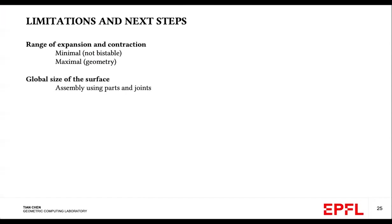There are several limitations to our pipeline. First and foremost, we are limited in our expansion or contraction range. So at the expansion range of around one, the unit cells are not bistable due to the finite hinge thickness. And at the maximal range, we're limited by the geometry of the unit cells. Therefore, there are surfaces that we cannot approximate without the introduction of, let's say, topological singularities.